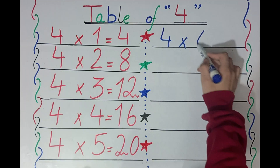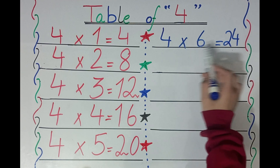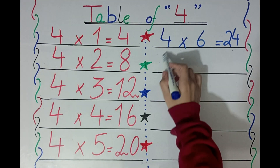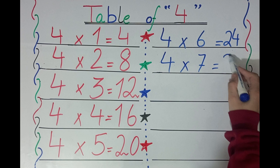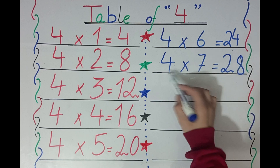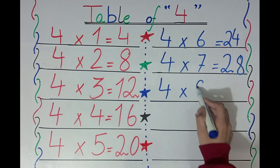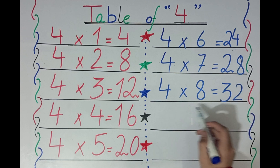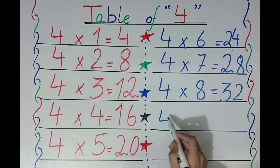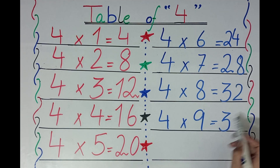Four six's are twenty-four. Four seven's are twenty-eight. Four eight's are thirty-two. Four nine's are thirty-six.